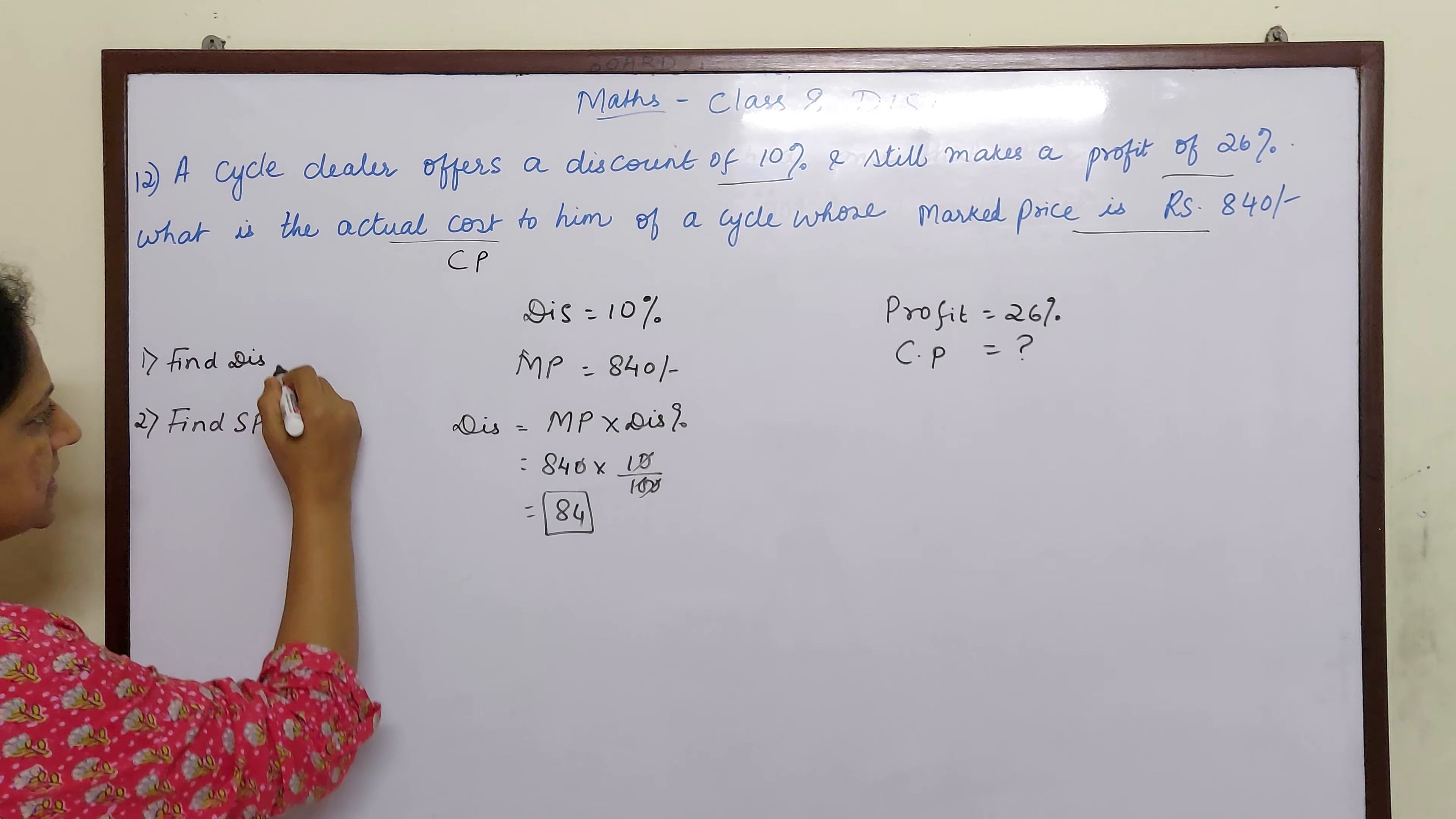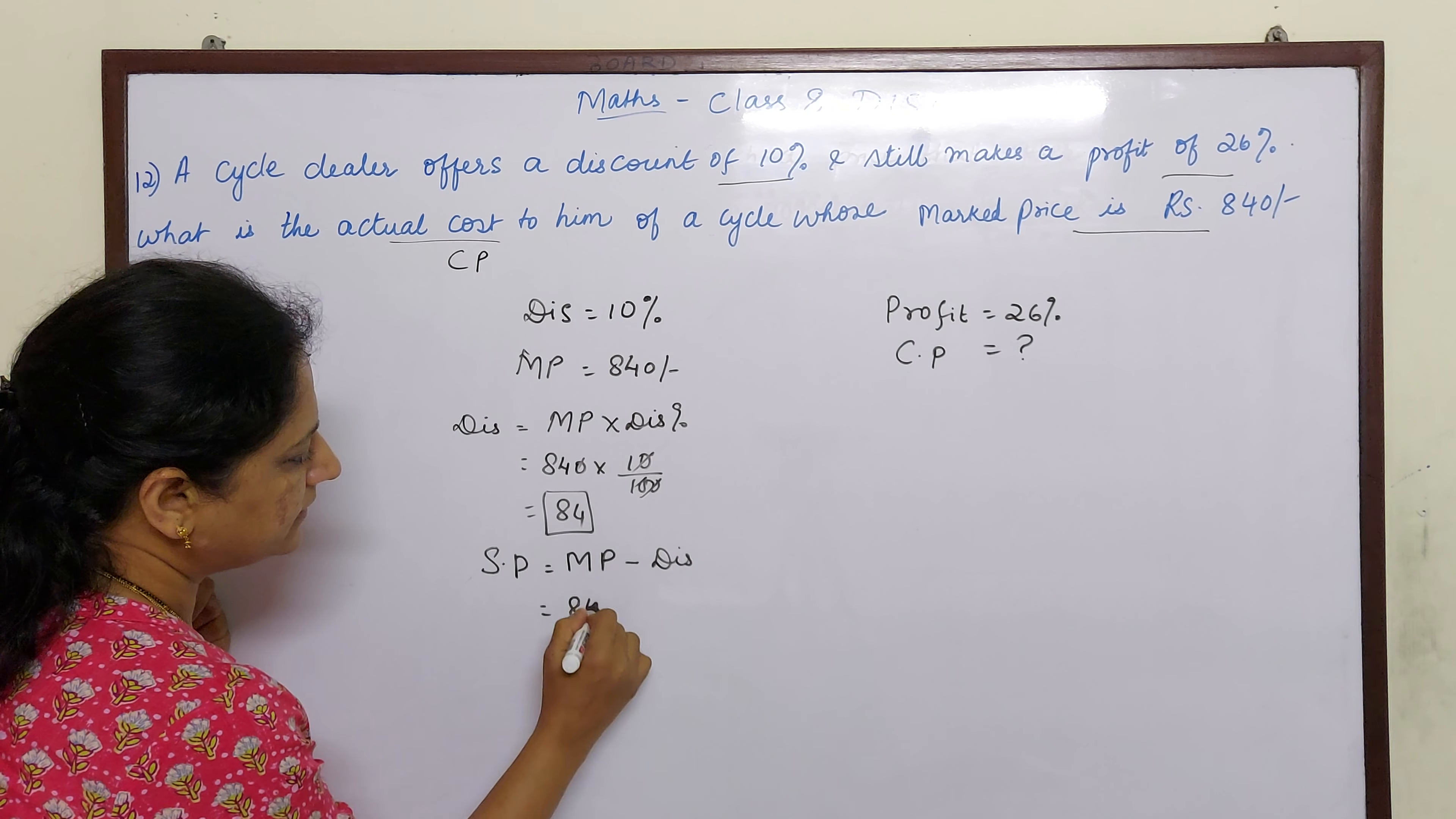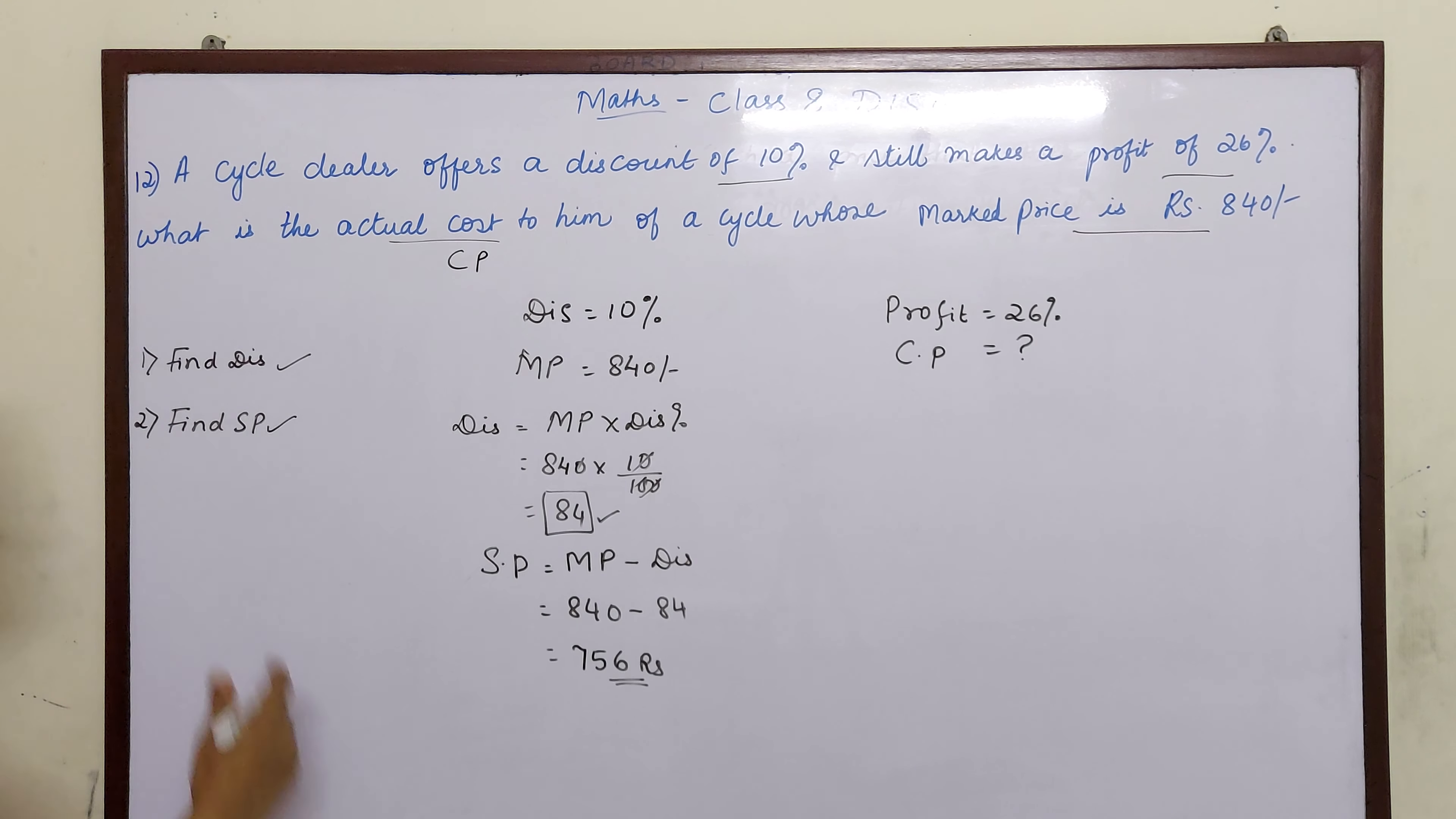Next I will find selling price. What is selling price formula? Marked price minus discount. Marked price is 840 minus discount 84 rupees. So our selling price is 756 rupees. So here we have come till this.